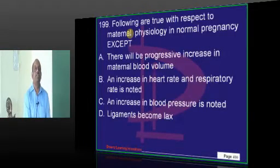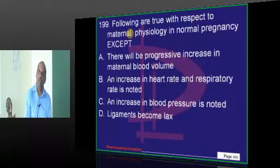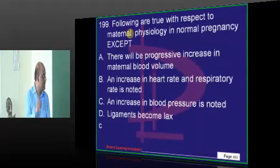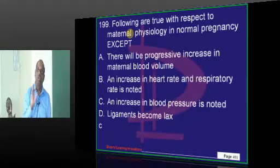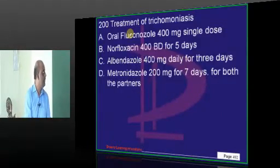Then maternal physiology in normal pregnancy — any entrance exam, this is a favorite question: how much does plasma volume increase, how much does heart rate increase, what happens to cardiac output? Ligaments become relaxed. Total peripheral resistance comes down but plasma volume increases, so cardiac output increases. When peripheral resistance is low, BP will be normal — it won't be elevated.